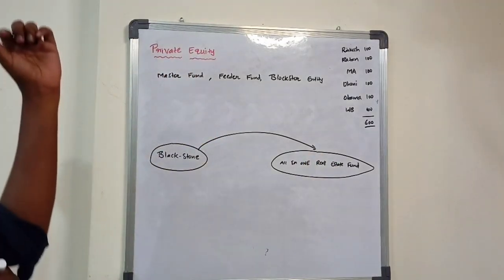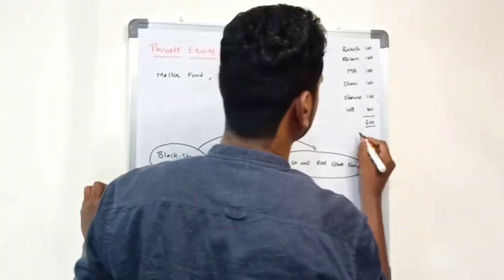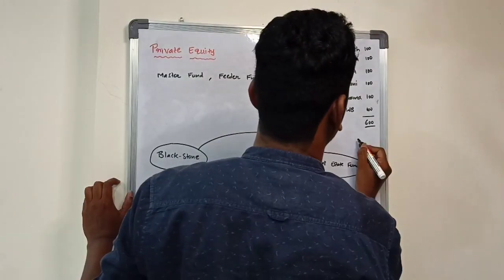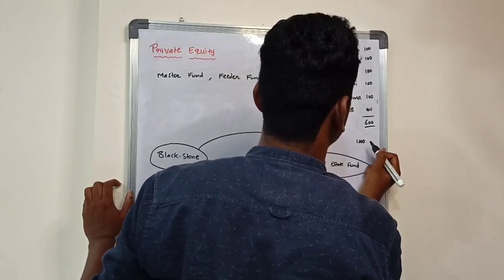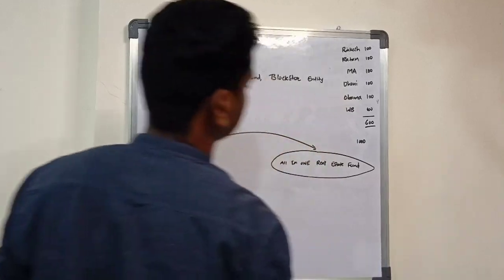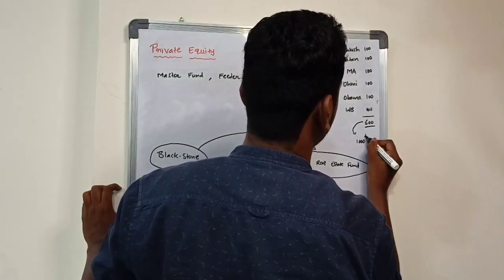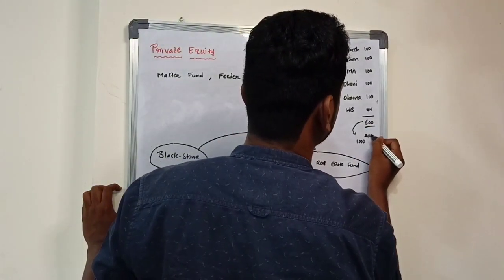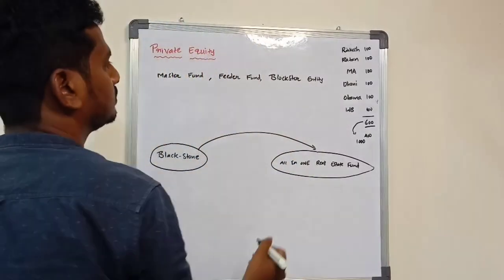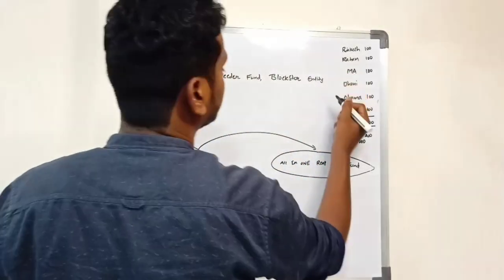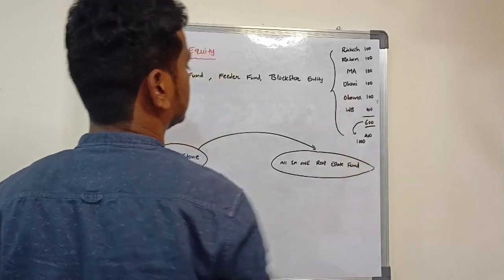Later it sold this investment for 1000 crores. So 400 crores will be the profit. Let us assume that this 400 crores is distributed to these investors.